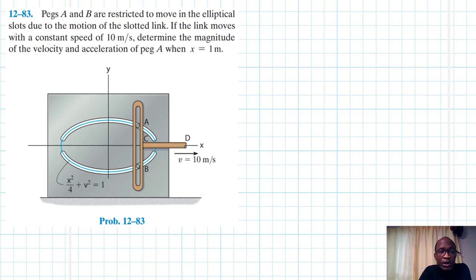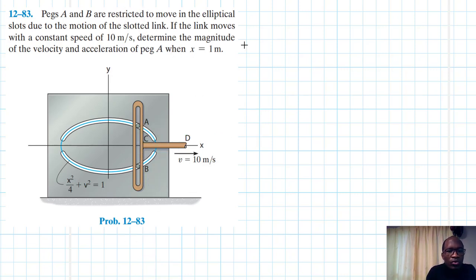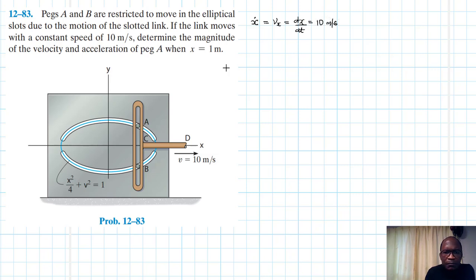We've been told that the link moves with a constant speed of 10 meters per second. From the figure, this particular peg is moving in the horizontal direction with this constant speed. We can therefore conclude that this constant speed is in the x direction, so x-dot, which equals Vx, which equals dx/dt, is equal to 10 meters per second.